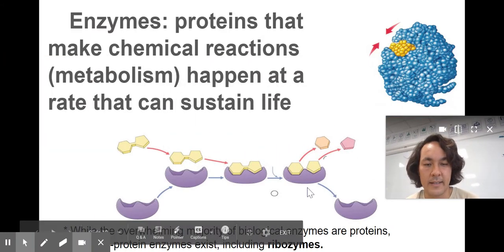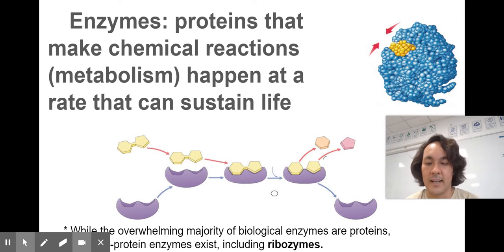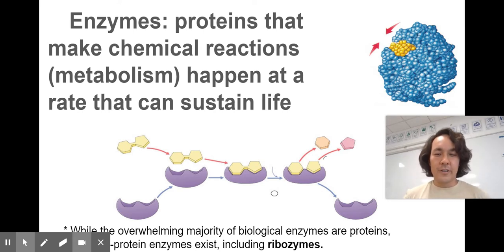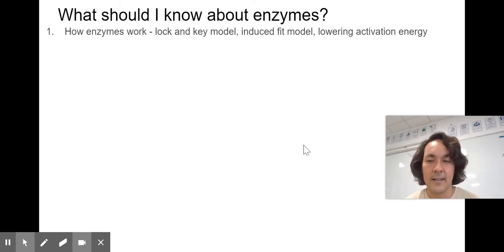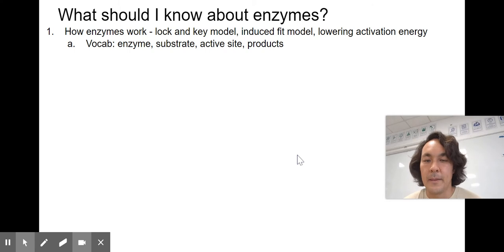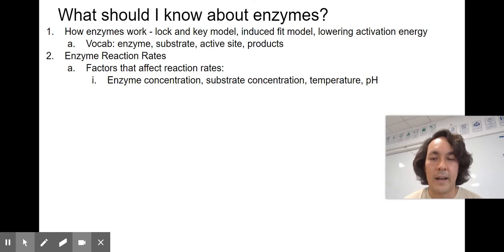Enzymes make reactions happen at a rate that can sustain life. For example, sucrase will break down sucrose or sugar into monosaccharides your body can digest. These enzymes are proteins. What should you know about enzymes? You should know how they work — the lock-and-key model, the induced fit model — and how they lower activation energy. You should use the vocabulary, describe reaction rates and things that affect them: enzyme concentration, substrate concentration, temperature, and pH. There are tons of graphing questions about enzymes in AP Classroom.